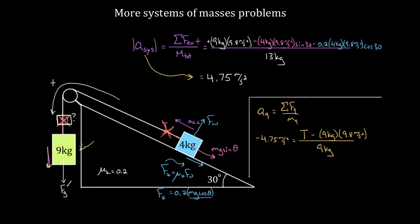We go back to normal Newton's second law rules for the individual box, where up is positive and down is negative, and we only look at forces on the nine kilogram mass. So the tension upward is positive, minus the gravity on the nine kilogram mass which is nine kilograms times 9.8 meters per second squared, divided by nine kilograms. Solving for the tension gives 45.5 Newtons — which is less than nine times 9.8, as it must be, because the object is accelerating downward so the net force has to point down.